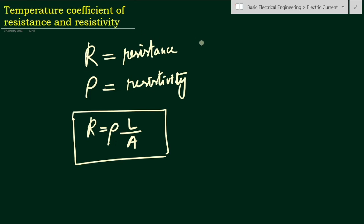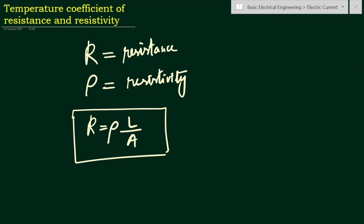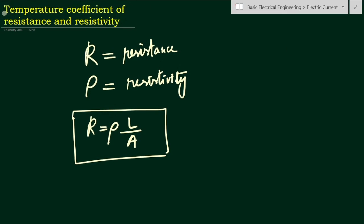Resistance is the opposition to the flow of current, or we can say that resistance is the opposition exerted by the conductor to the flow of electrons. Resistivity is the property of the material because of which it opposes the flow of electrons or the flow of current. Now let us go to our topic — we have to find out the temperature coefficient of resistance as well as resistivity.